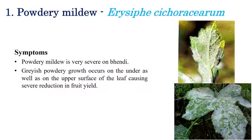The first disease is powdery mildew, caused by Erysiphe cichoracearum. The major symptom is white color powdery growth seen on the surface of the leaf. In bhindi, the powdery growth is mainly seen on the upper surface of leaves, and in rare cases it can also be seen on the lower surface.